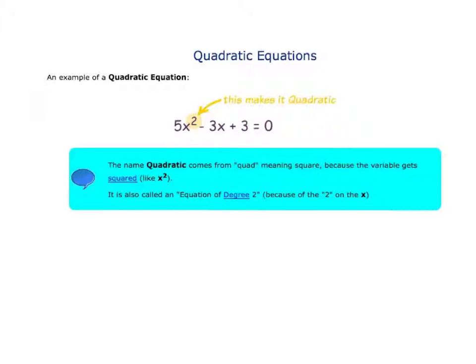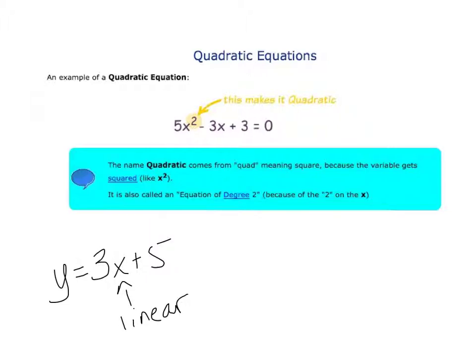Just consequently, if we think about y equals 3x plus 5, this is what we call linear — a linear function. But that's not what we're talking about right now.